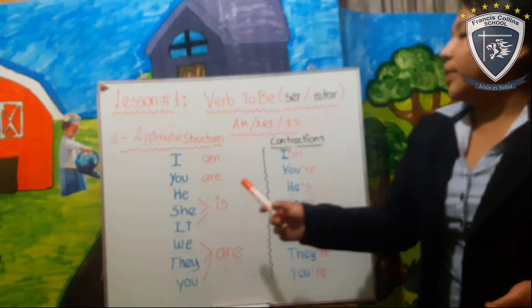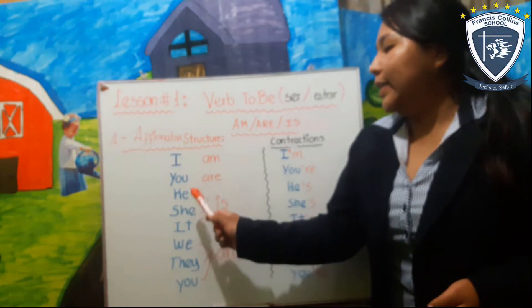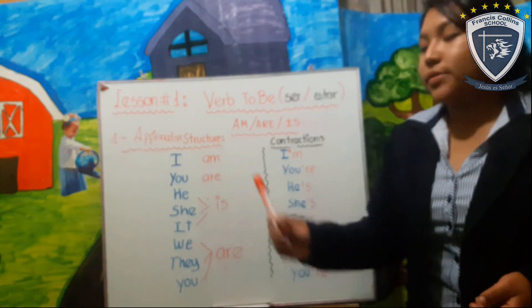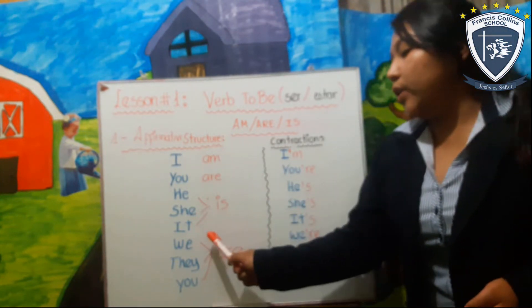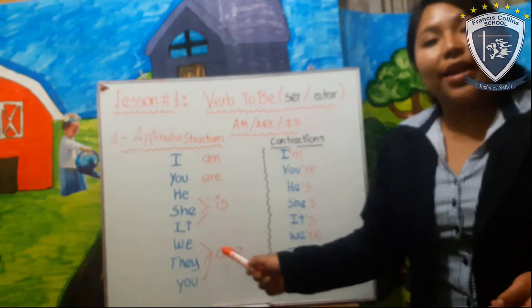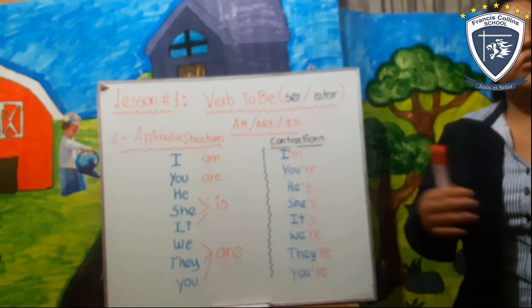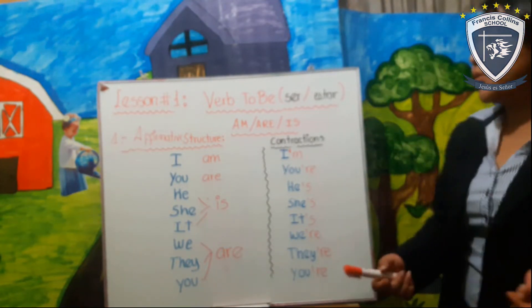Muy bien. I, you, he, she, it son singulares. We, they, you son plurales. Hablamos de dos o más personas.